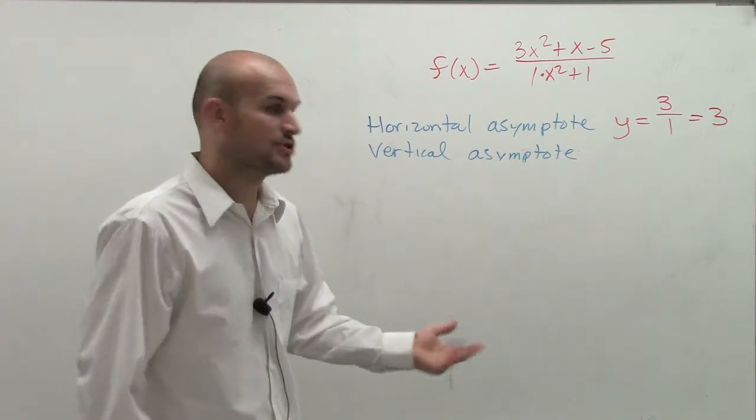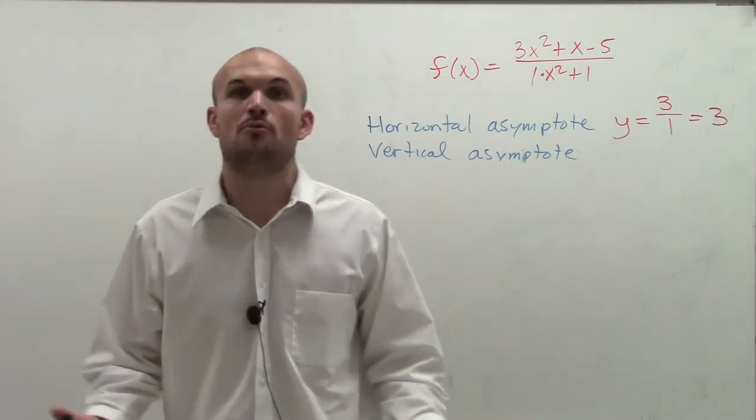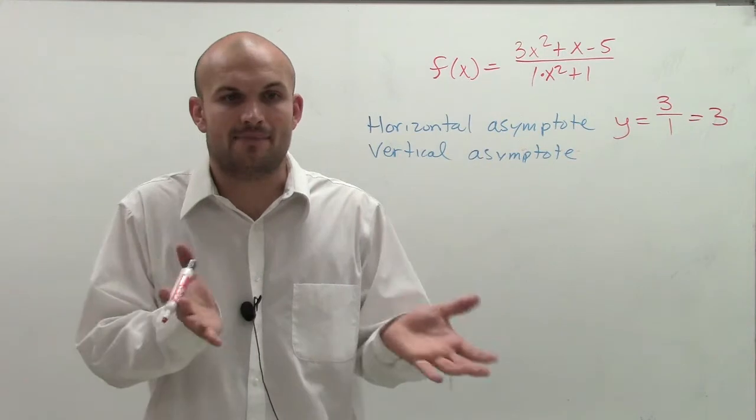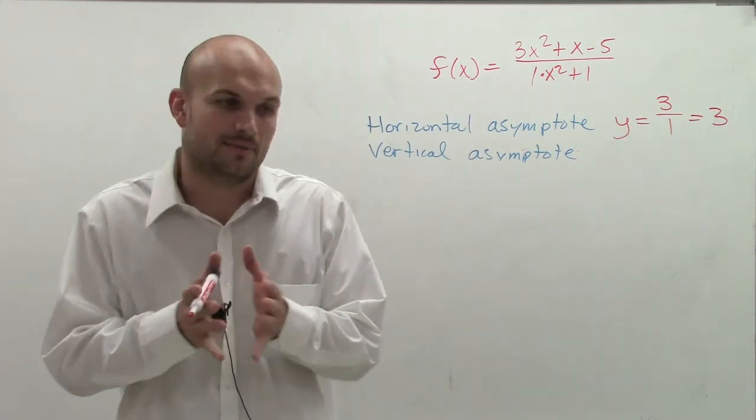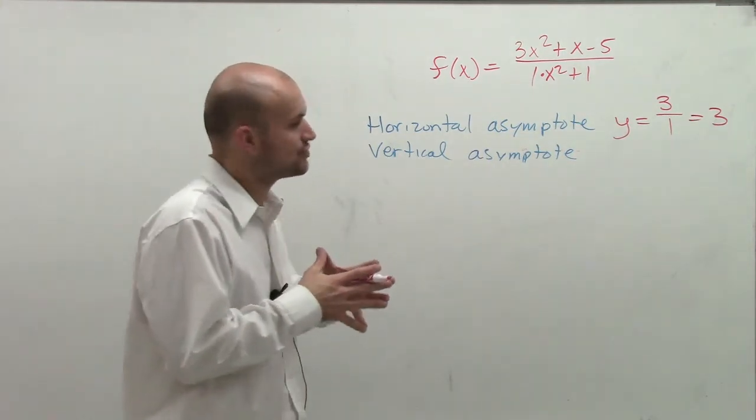Now, the vertical asymptote, remember, is going to be our constraint on our domain. Right? It's going to be what x values are going to be our constraint.